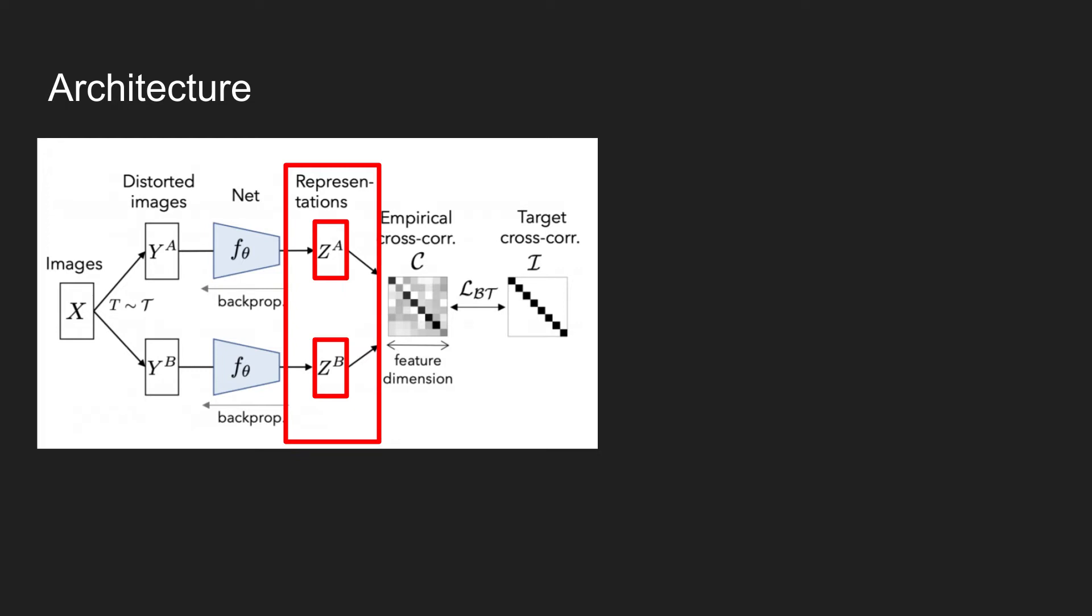Using these two representation vectors, an empirical cross-correlation matrix is formed. The objective is to make this cross-correlation matrix an identity matrix.